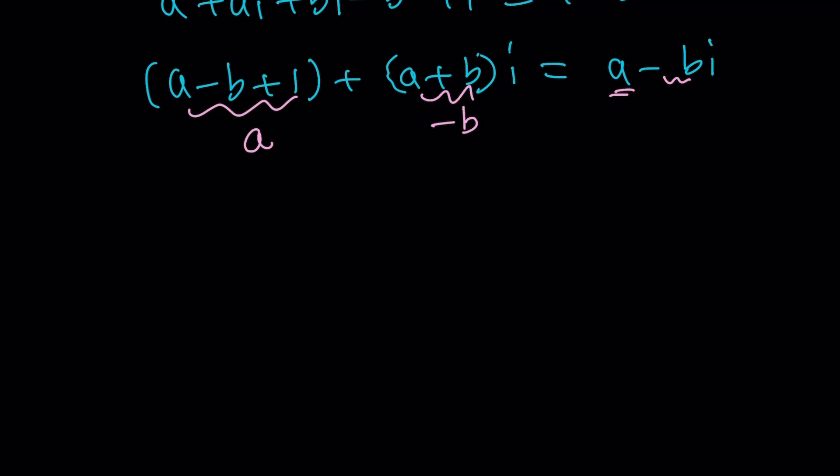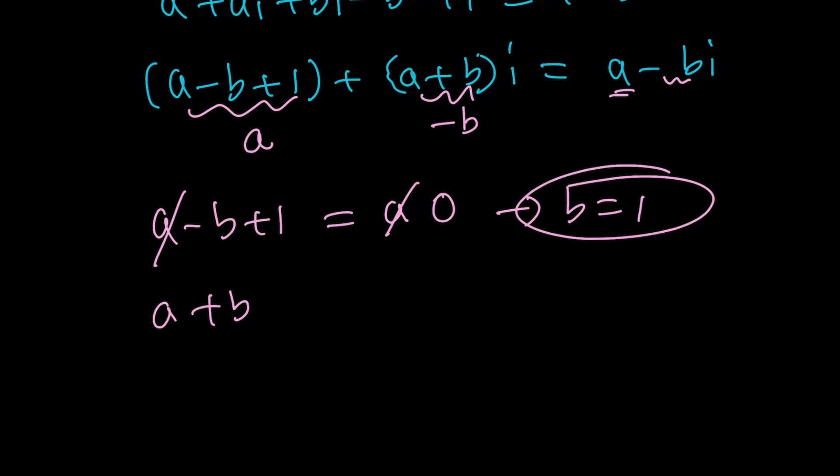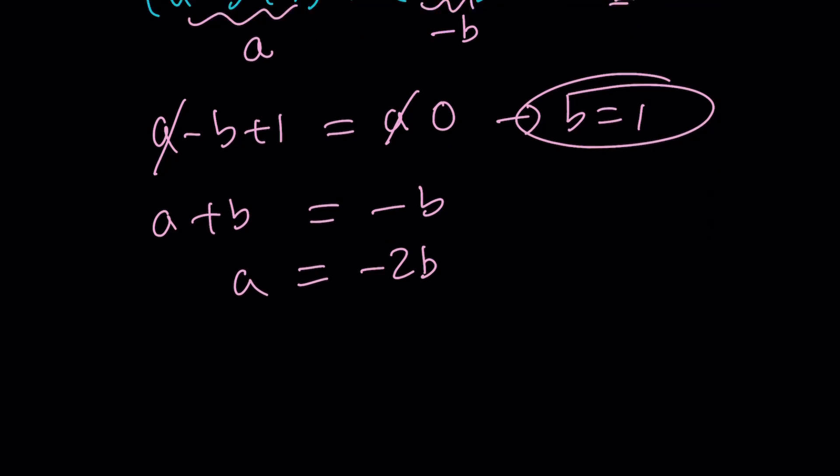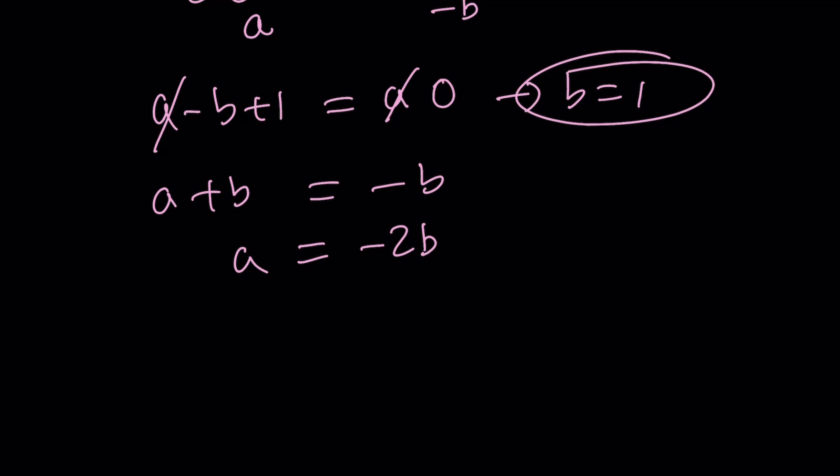Let's go and work with the first one first. A minus b plus one is equal to a. Yay. A cancels out. We get b equals one. Awesome. So b is equal to one. That's going to be helpful. And the second one gives us a plus b equals negative b. And a, this means a is equal to negative two b or not two b. Yes, I was able to make that joke. And since b is equal to one, a is going to be negative two.